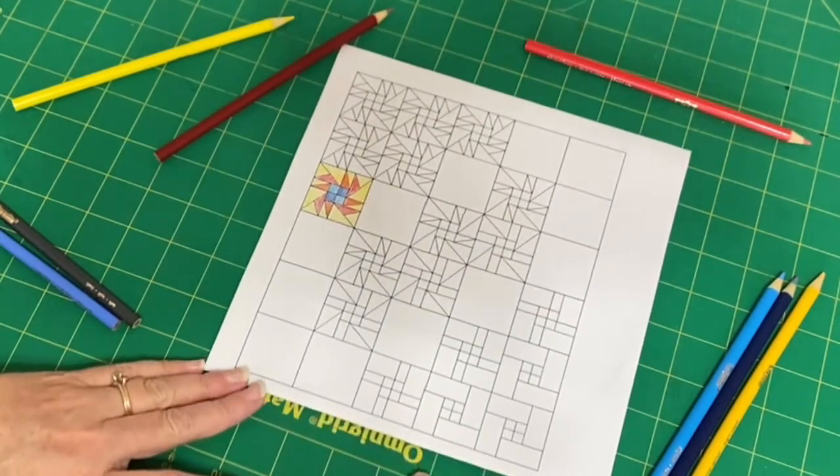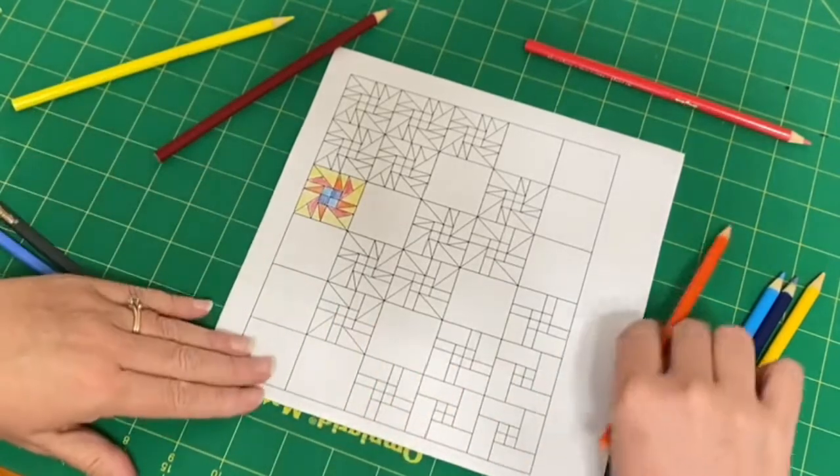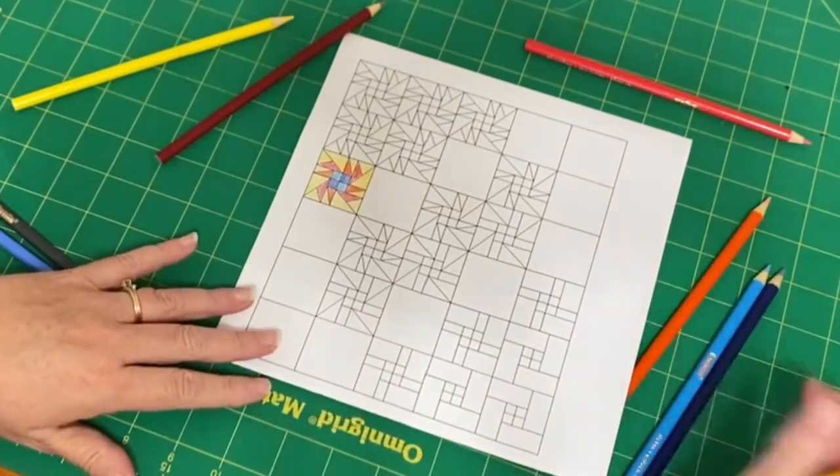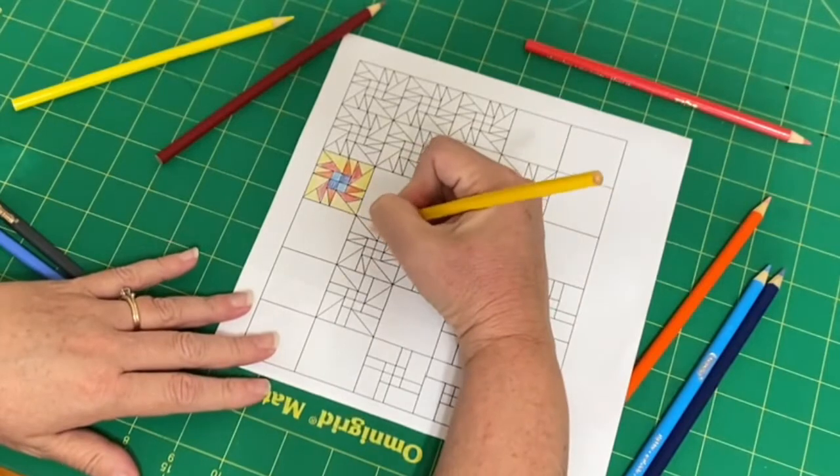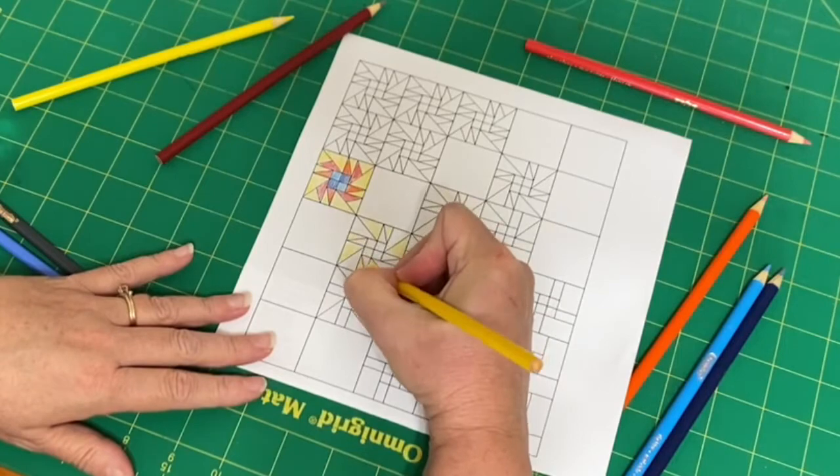So once you have the first block colored, then you can carry it through. And I was going to see how these different blocks looked with that yellow background.